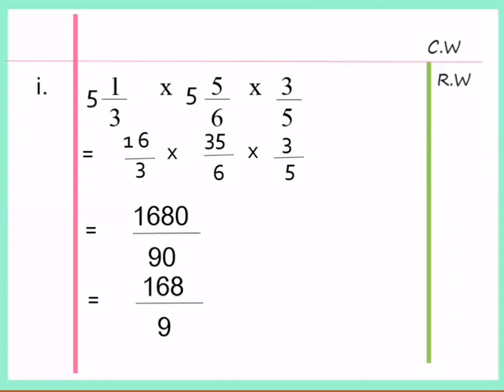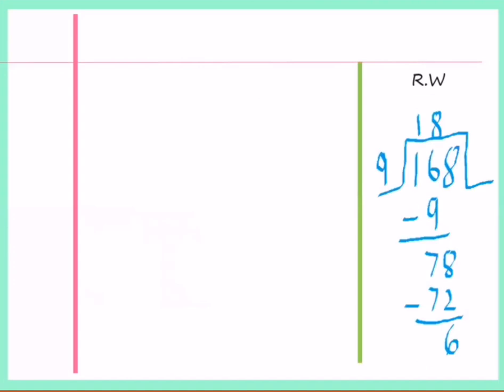Okay students, here we will divide because this is an improper fraction. Let's divide. After division, you will get 18 as whole number, 6 as numerator and 9 as denominator. So write answer: 18 whole 6 over 9.